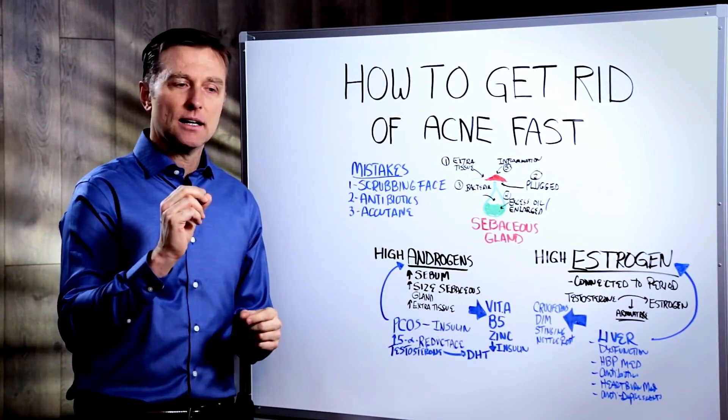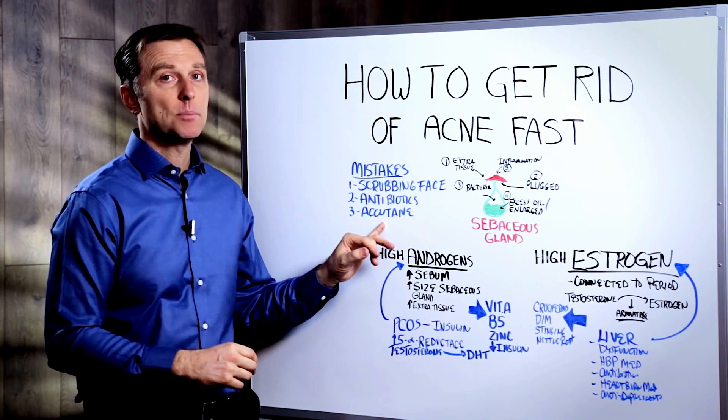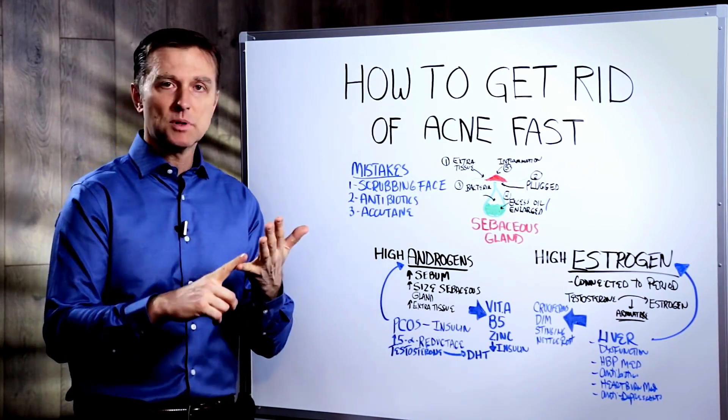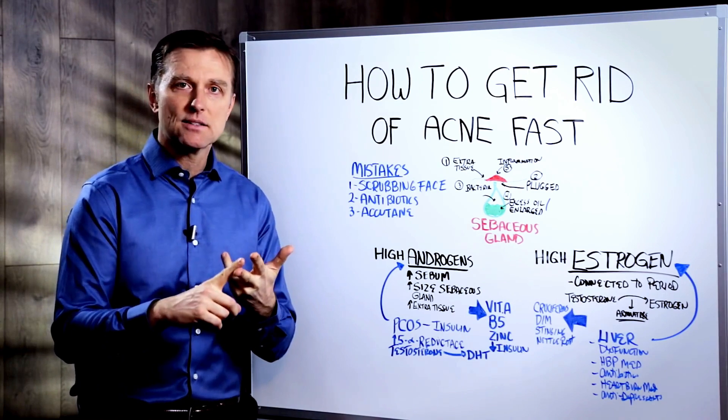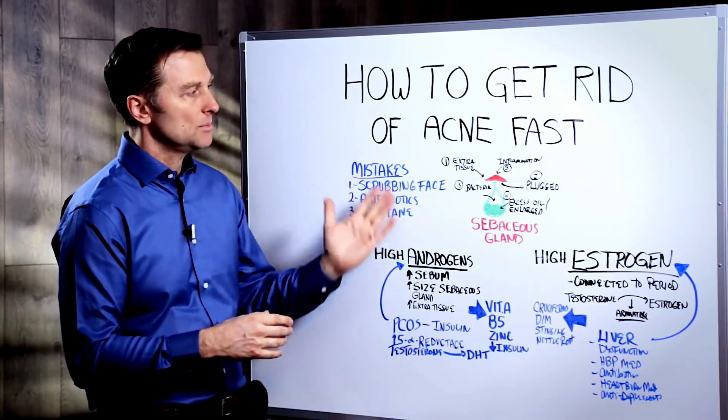Accutane is kind of a synthetic version of vitamin A, which does work, but it has some slight minor complications like nosebleeds, infertility, blindness. I think it's off the market now, if I'm not mistaken, but these are some mistakes that people make.